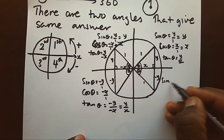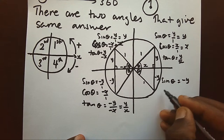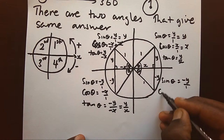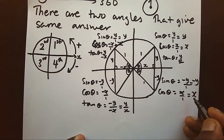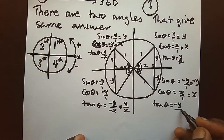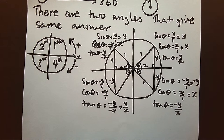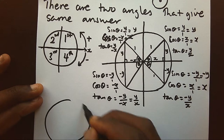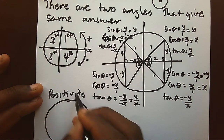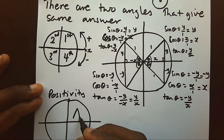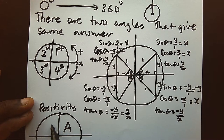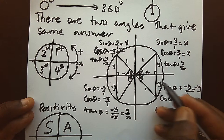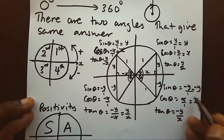In the fourth quadrant, sine gives negative y over 1, giving a negative answer. Cosine gives x over 1, giving a positive result. Tangent gives negative y over x, giving a negative answer. So in the fourth quadrant, only cosine is positive.